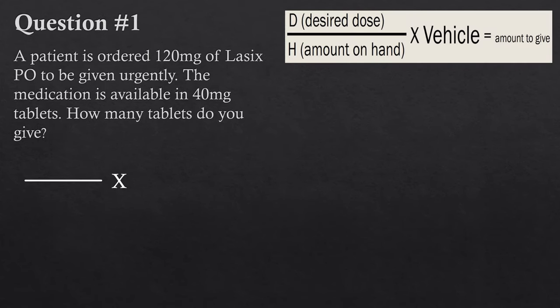Question one: a patient has ordered 120 milligrams of Lasix PO to be given urgently. The medication is available in 40 milligram tablets. How many tablets do you give? We've got our formula here. Let's start with D — what's the desired dose? The patient has ordered 120 milligrams, so we're going to put that at the top.